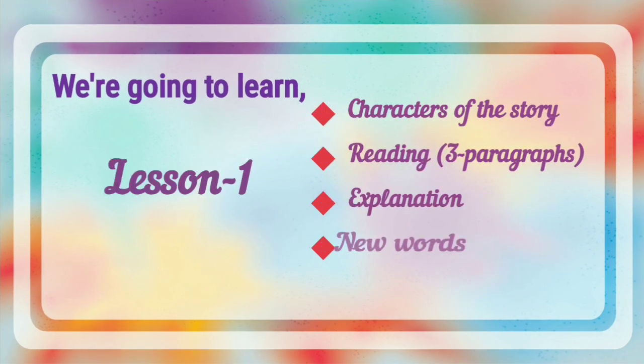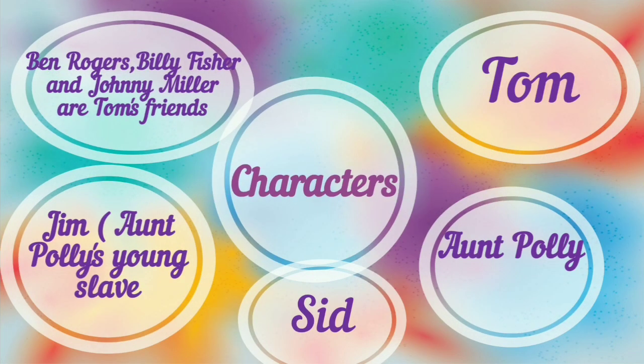Children, we already knew that in the last class the main character of this story is Tom Sawyer. The next character is Aunt Polly, who is Tom's aunt. Sid is Tom's cousin brother. Jim is Aunt Polly's young slave. And Ben Rogers, Belle Fisher, and Johnny Miller are Tom's friends. These are the main characters of this story.